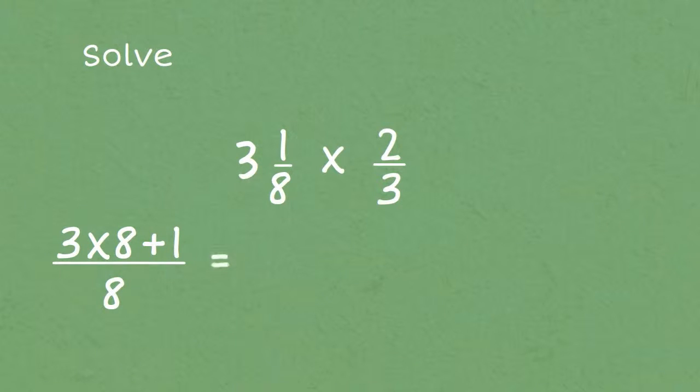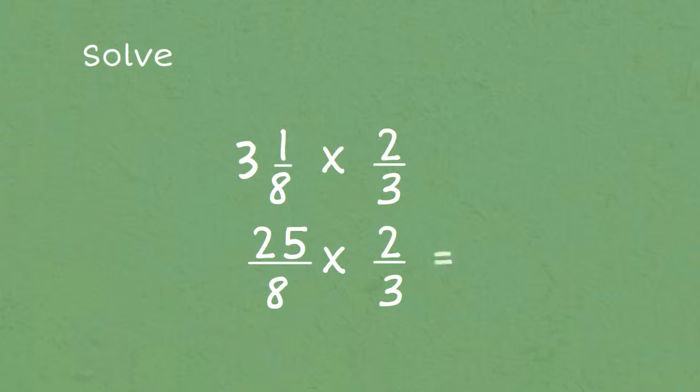We will turn the mixed number into an improper fraction by multiplying the whole number with the denominator and adding the numerator, giving us twenty-five-eighths. We multiply that by two-thirds, which gives us fifty over twenty-four, which is an improper fraction.